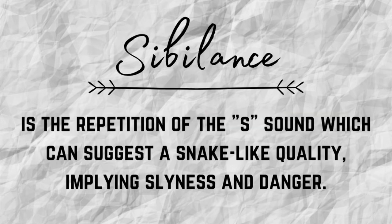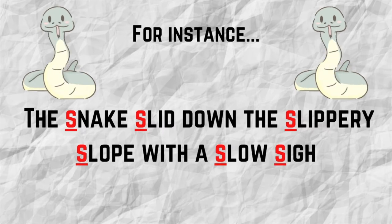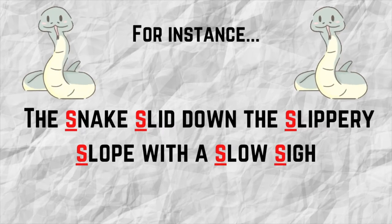Sibilance is slightly different. It is the repetition of the s sound, which can suggest a snake-like quality implying slyness or danger. For example: the snake slid down the slippery slope with a slow sigh.